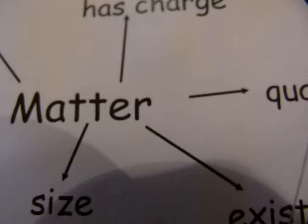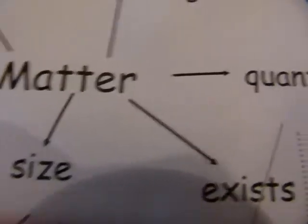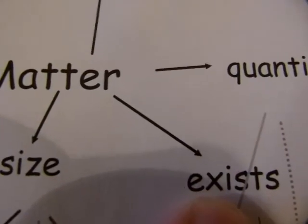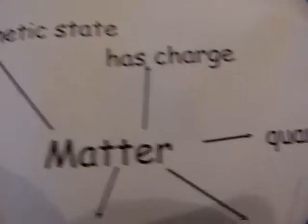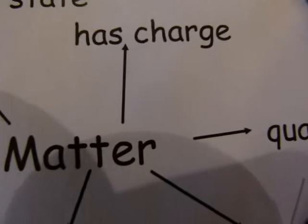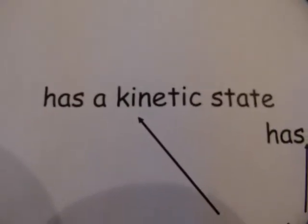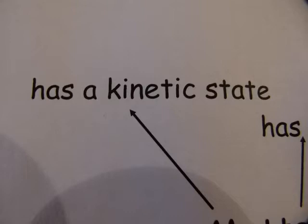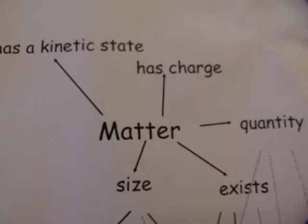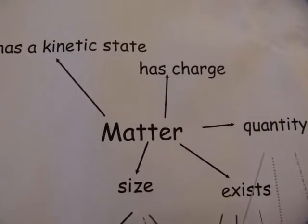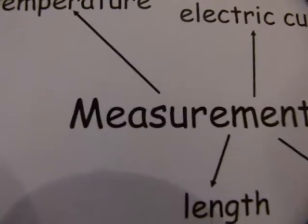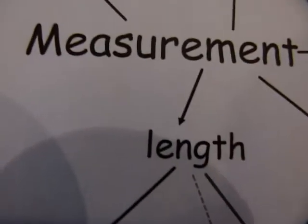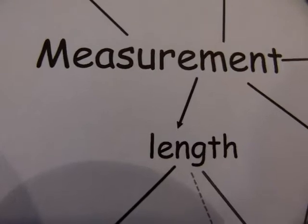The second quality is that matter exists not only in three dimensions, but it also exists in a fourth dimension. Matter has a quantity that can be measured. Matter has a charge with it at all times, and matter is said to have a kinetic state at all times. These are the qualities that can be investigated about matter. When it comes to measuring these — and this is the measurement sheet — the size of matter is referred to with the word length.